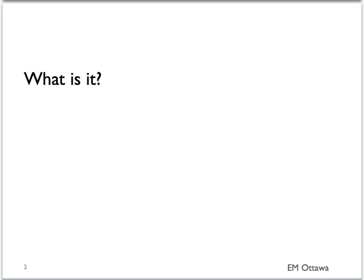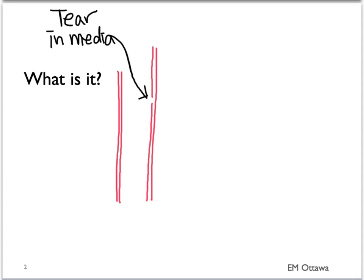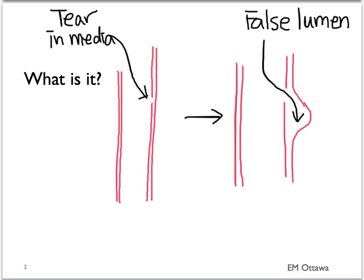What is aortic dissection? It occurs when there is a tear in the media of the aorta. The blood now creates a false lumen. The column of blood in the false lumen can keep dissecting further or it can propagate backwards.